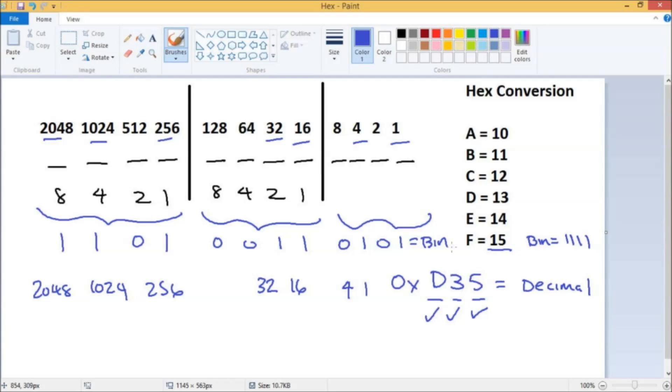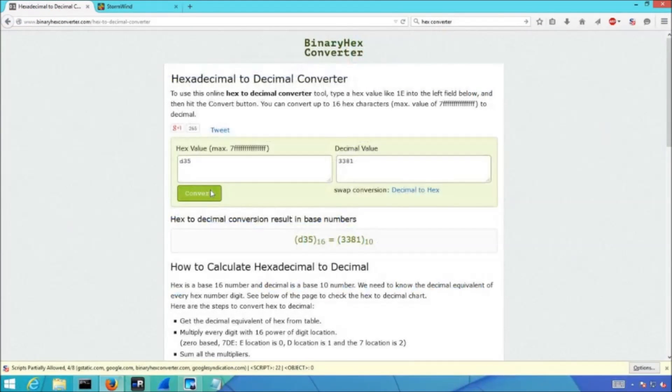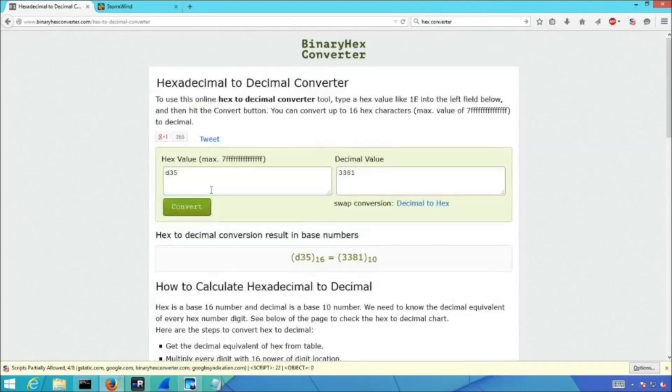Let's use our handy dandy little calculator and we had D35. Let me go ahead and click convert and then you guys can double check your work. Let me make this a little bit bigger too. All right, so we should have 3381 once you've punched those numbers into your calculator. All right, I'm going to clean up the whiteboard one more time and we'll go through one more example.